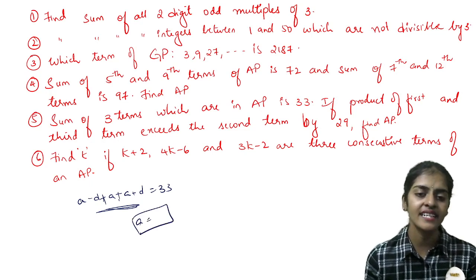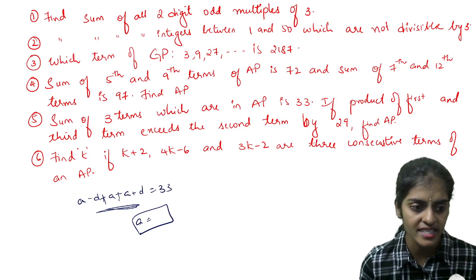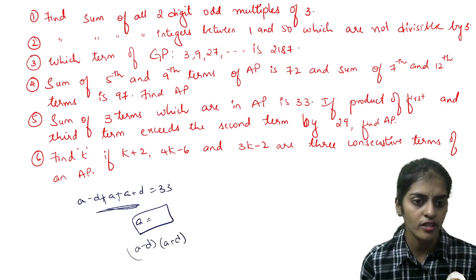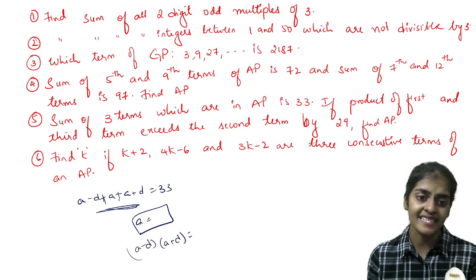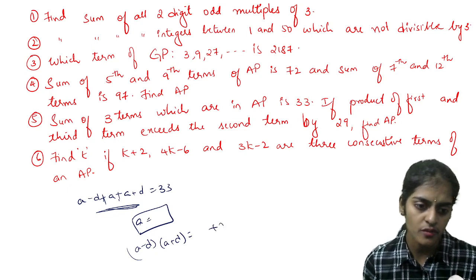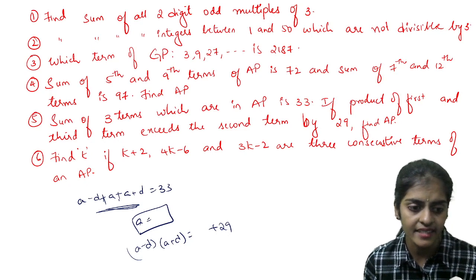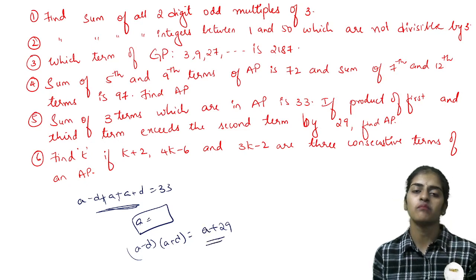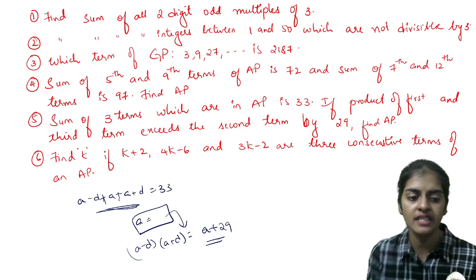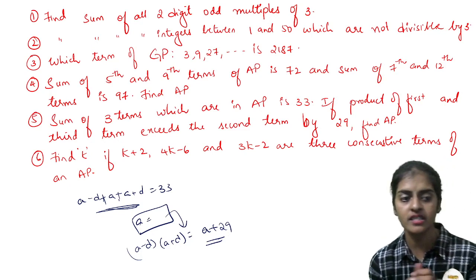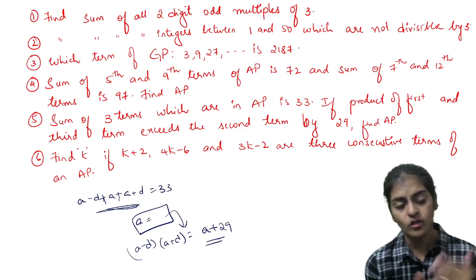See the next condition: product of first term and third term exceeds second term by 29. So it is 29 more than the second term. The second term is a. The a value you already know—substitute it here and you will get the d value.